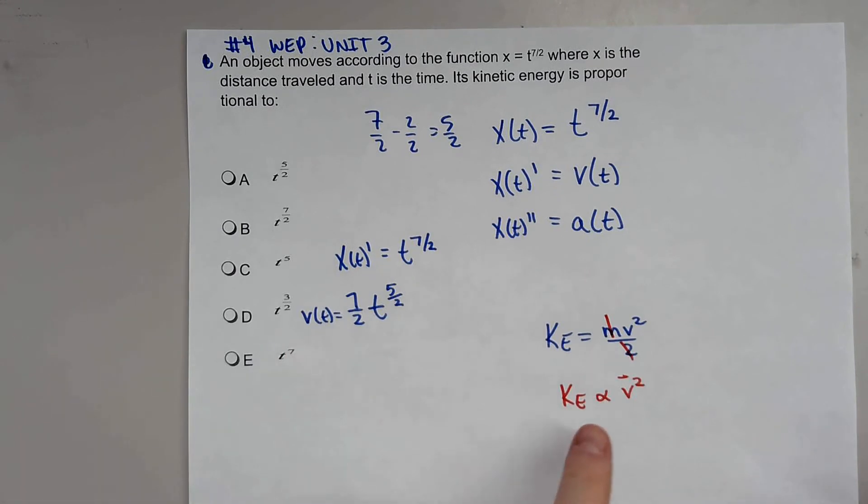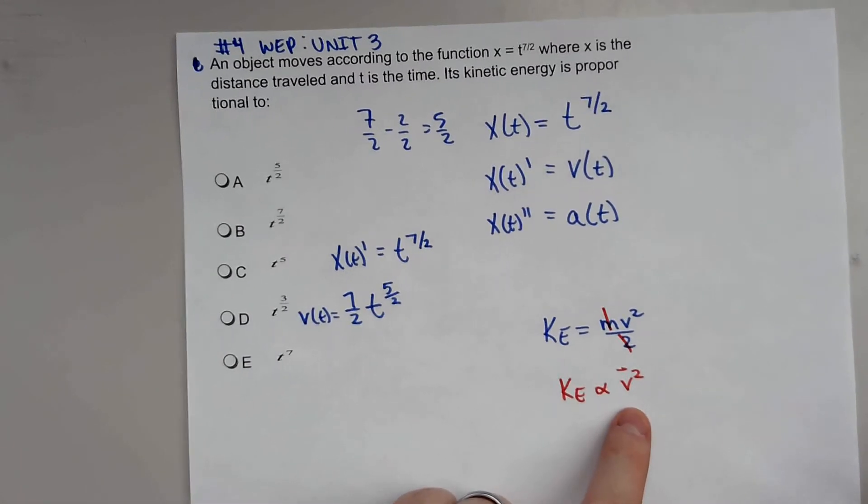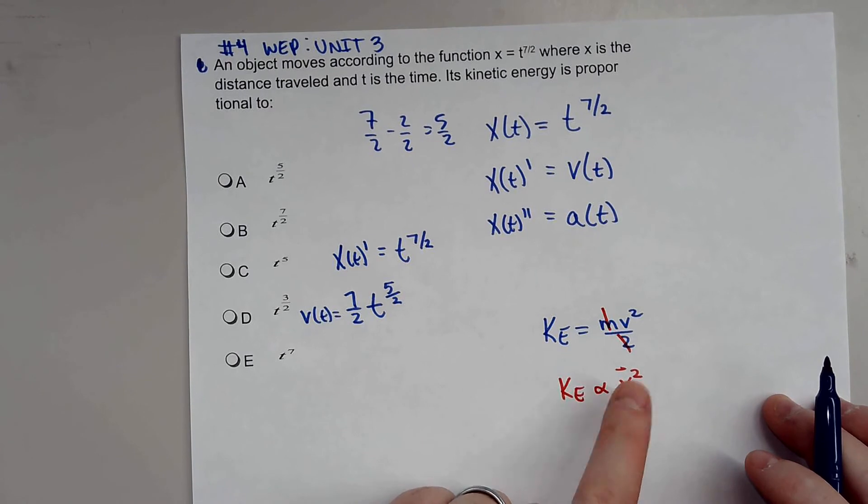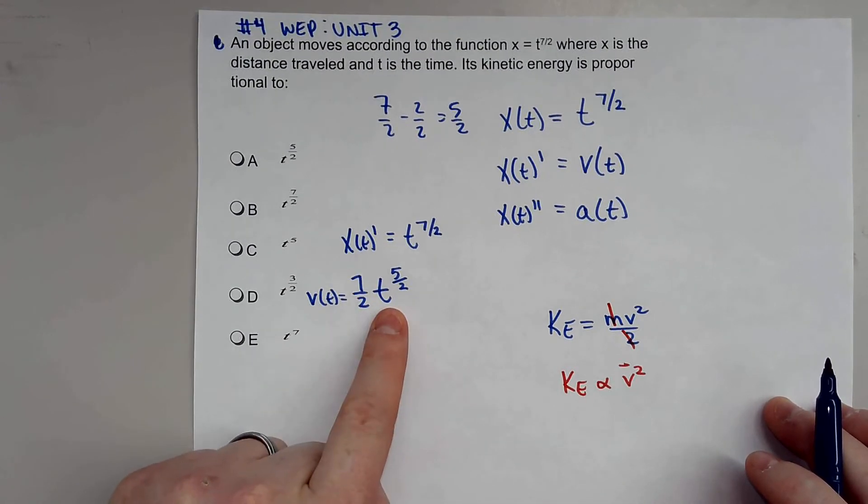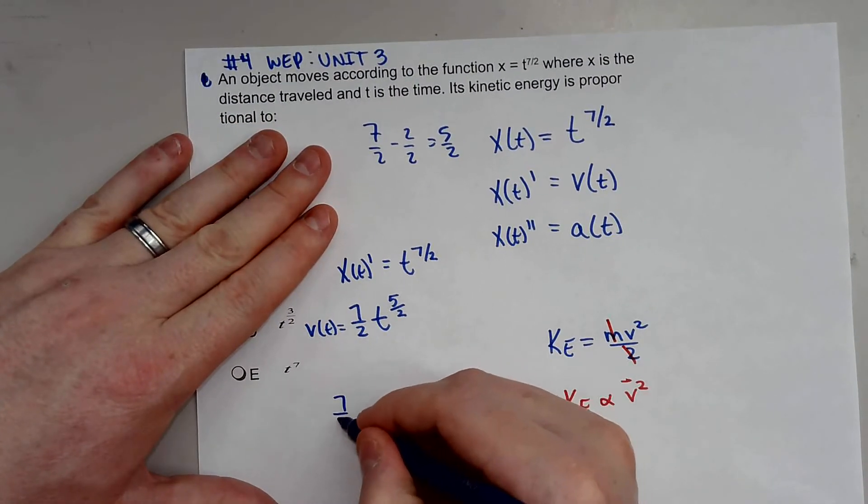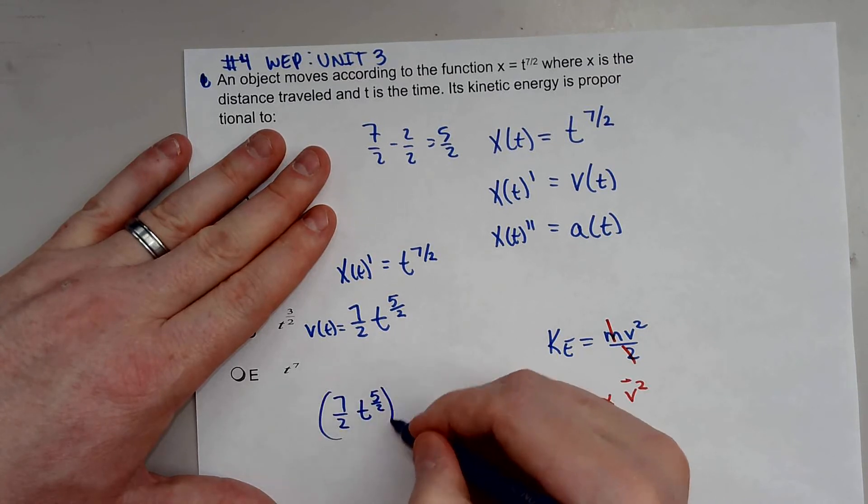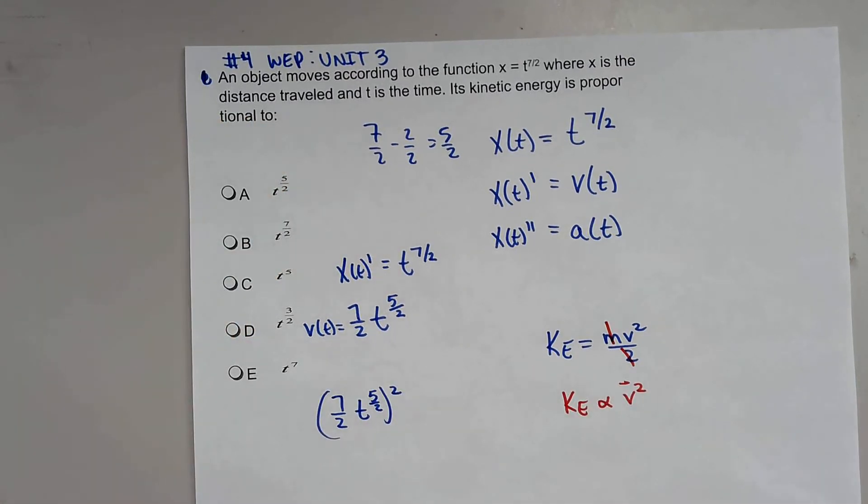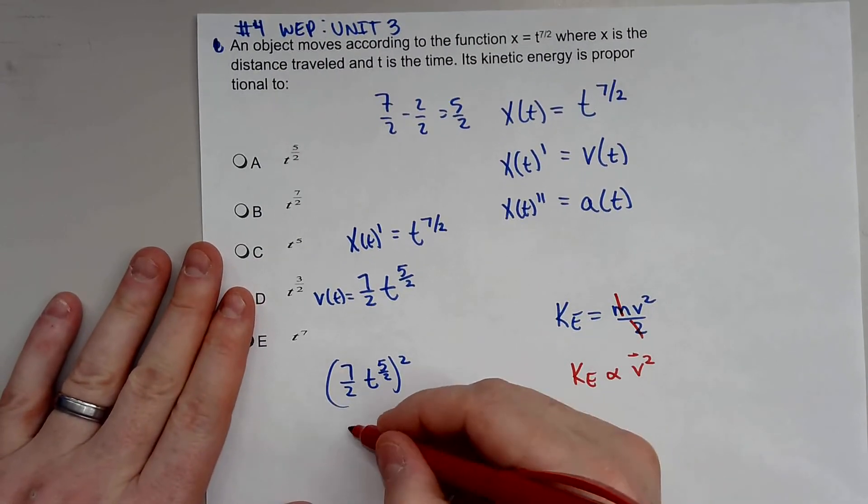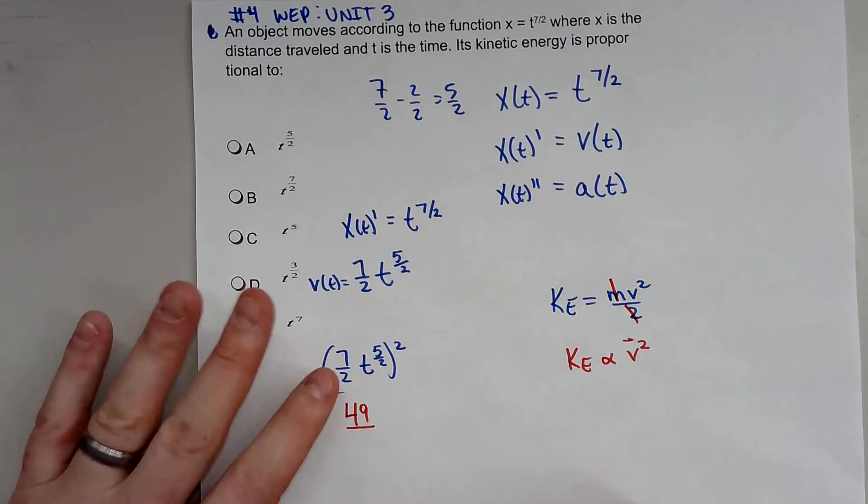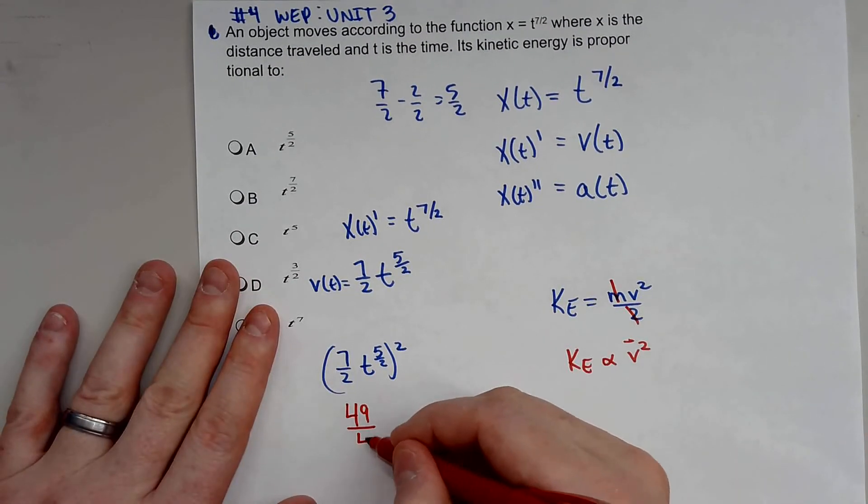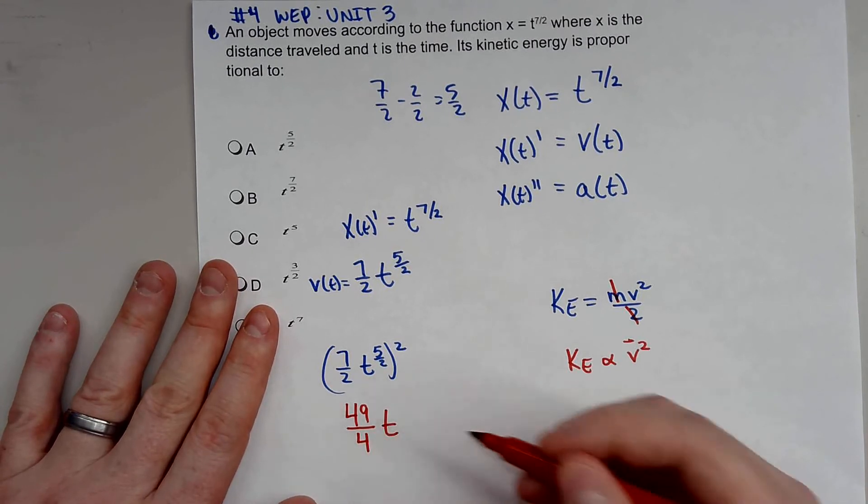But if you notice, our velocity function is actually squared. So what that means is we have to square this. We're going to take (7/2)t^(5/2) and square it. Now, when you square this type of function, anything out front you're just going to square it. So 7 times 7 is 49, 2 times 2 is 4. The t stays right there.